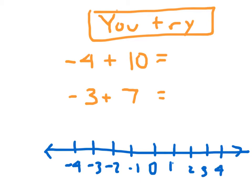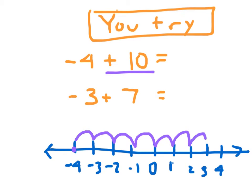For that first one, we have negative 4 plus 10. Here's negative 4 — moving to the right 10 places: 1, 2, 3, 4, 5, 6, 7, 8, 9, and 10. So that would end at 6. Negative 4 plus 10 is 6.